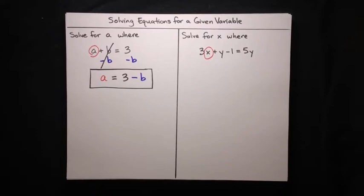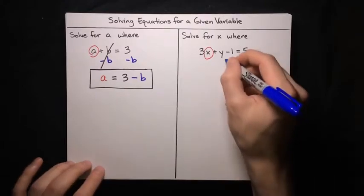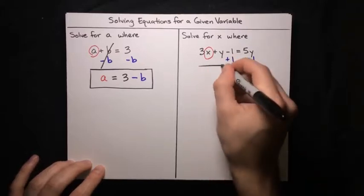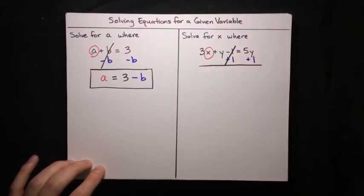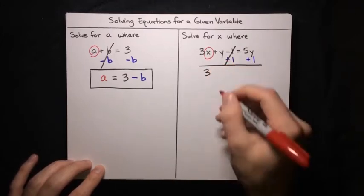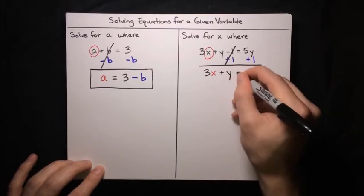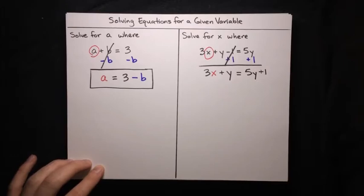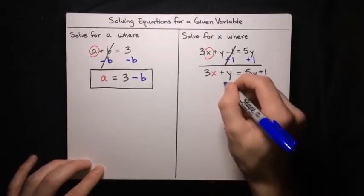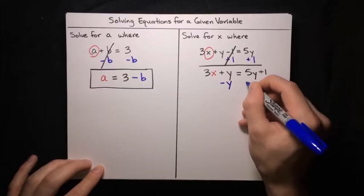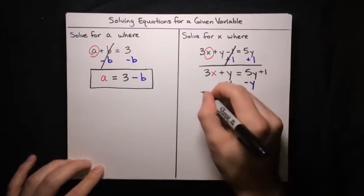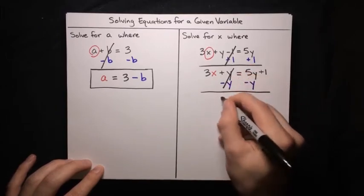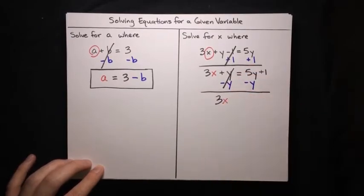Why don't we focus on the minus 1 part first? How can we cancel out a minus 1? Well, according to the addition principle, all we have to do is add 1 to both sides. So we do that, the minus 1 and plus 1 cancel, and on the left hand side we've just got 3x plus y, and that's equal to 5y plus 1. Now we need to get rid of the plus y on the left hand side, and according to the addition principle, we can do that by subtracting y — minus y from both sides. The plus y and minus y cancel, and we've just got 3x left on the left hand side.